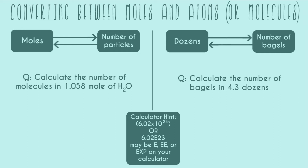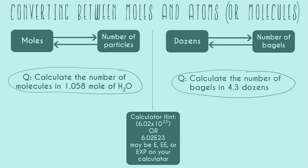In your class, you're probably going to do problems like those on the left-hand side. But first, let's do a problem that's easier to immediately understand — conversions between dozens and number of bagels. If we have to calculate the number of bagels in 4.3 dozens, this immediately makes more sense than any mole problem. If we have one dozen, we automatically know that equals 12 bagels, and two dozens equals 24 bagels. We don't have to think too hard about this.